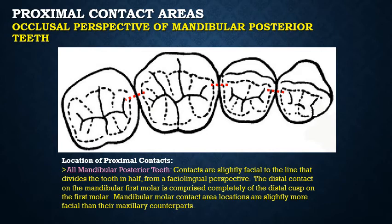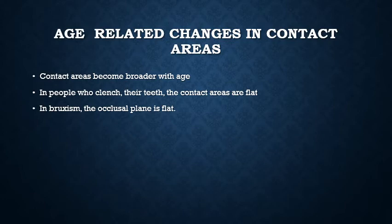From the occlusal perspective of mandibular posterior teeth, similar to maxillary posterior teeth, the contact areas are slightly facial to the facial-lingual dimensions. One exception is the distal contact of the mandibular first molar, which is completely comprised of the distal cusp, meaning the distal cusp makes up the whole contact area.